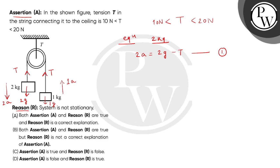Now let's form a force balance equation for the 1kg mass. So this is 1a equals to T minus 1g. This is equation number 2.